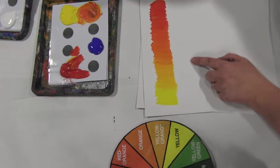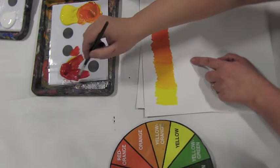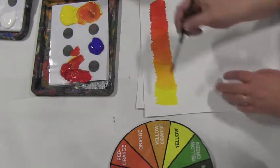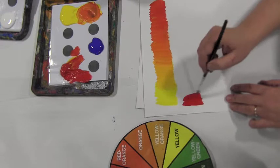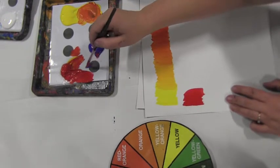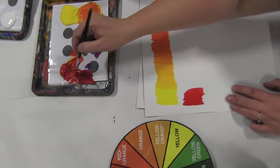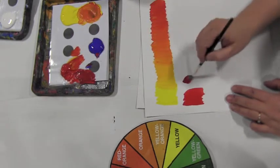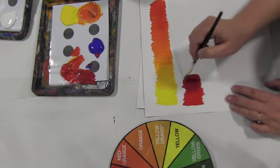And from my red, I can add a little bit of blue. Leave a gap, and I should be able to go to violet.